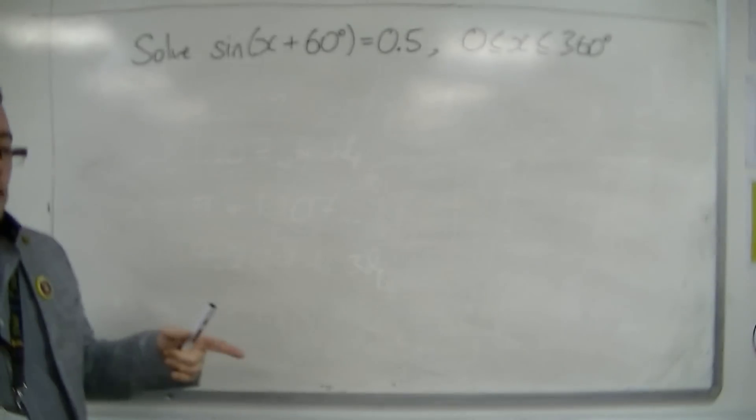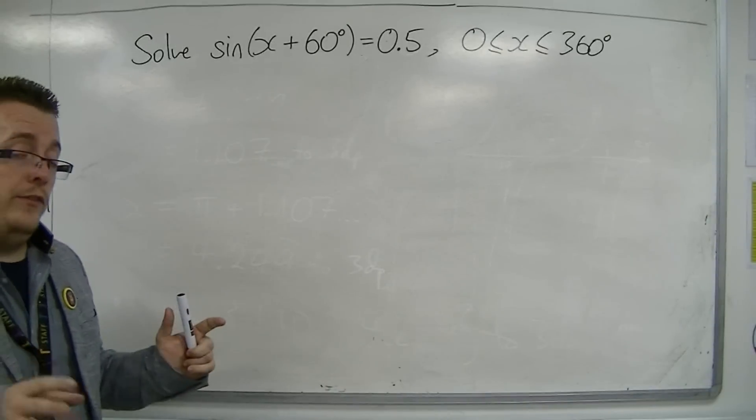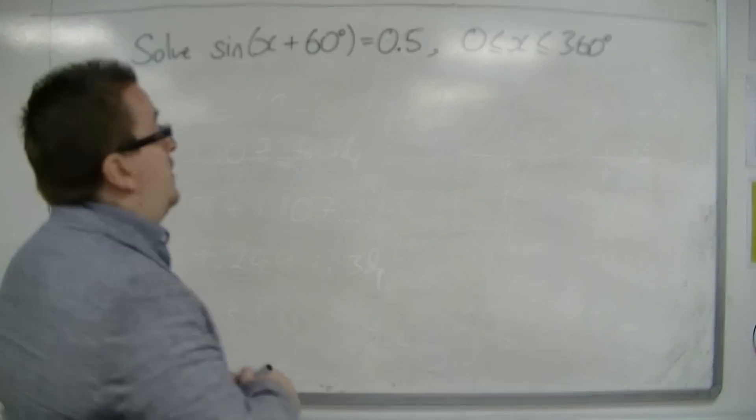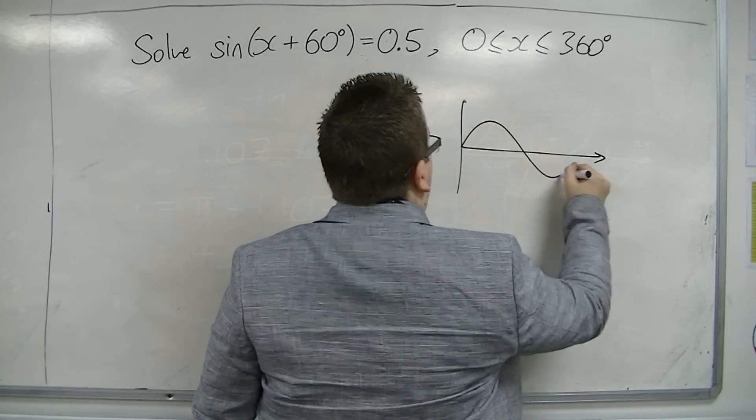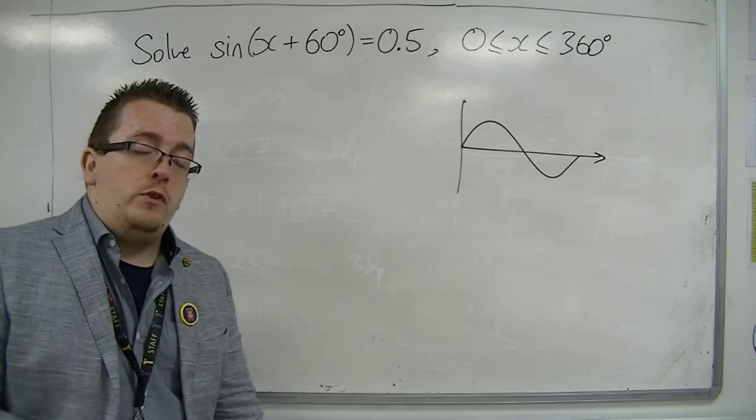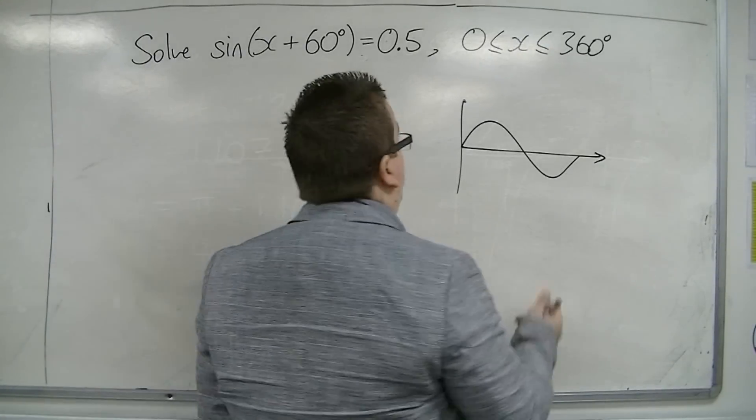So when we are solving a trigonometric equation like this, we are always going to do a little sketch to make sure we remember what sine looks like. Okay, I'm not drawing sine of x plus 60 degrees, I'm just going to draw sine x.